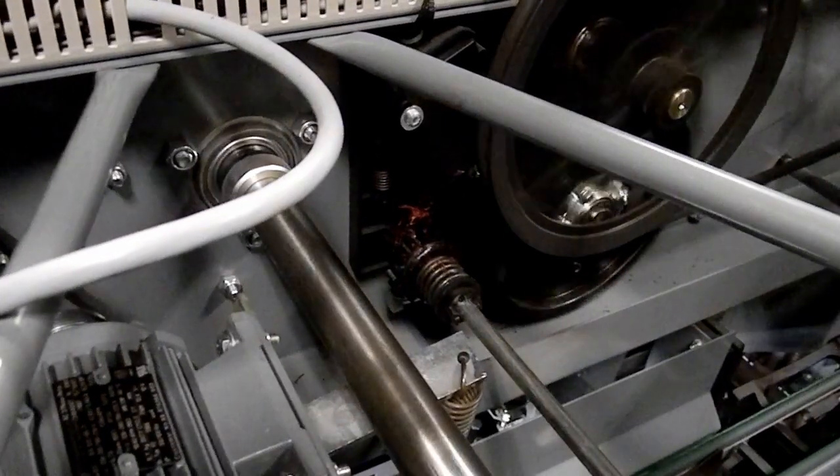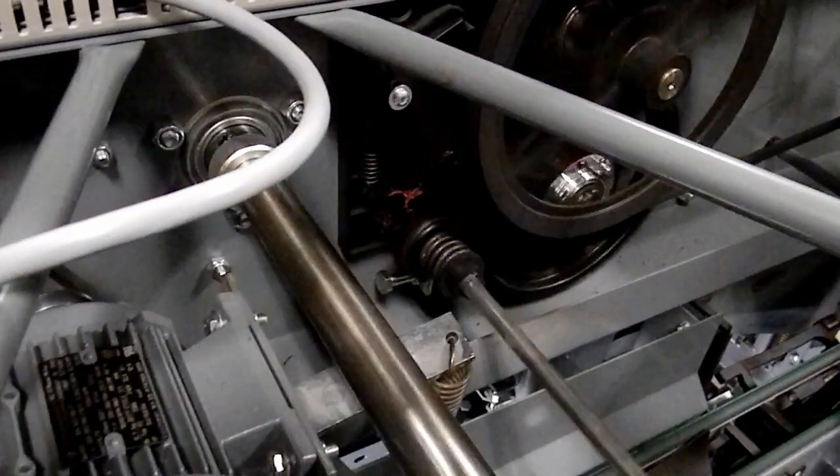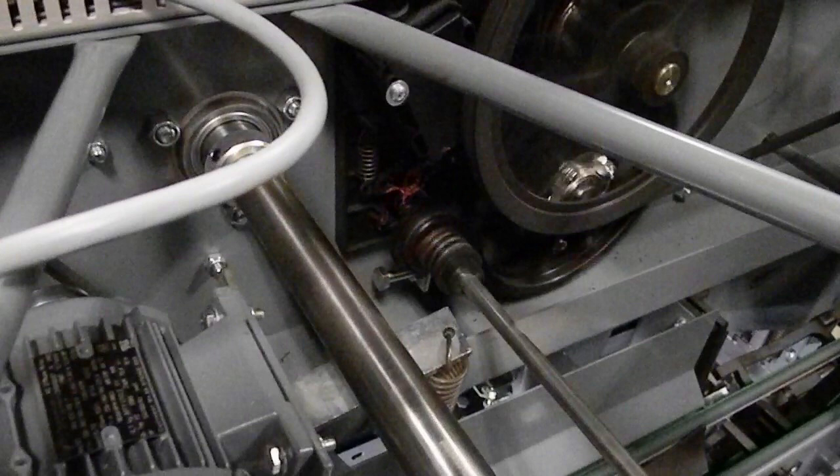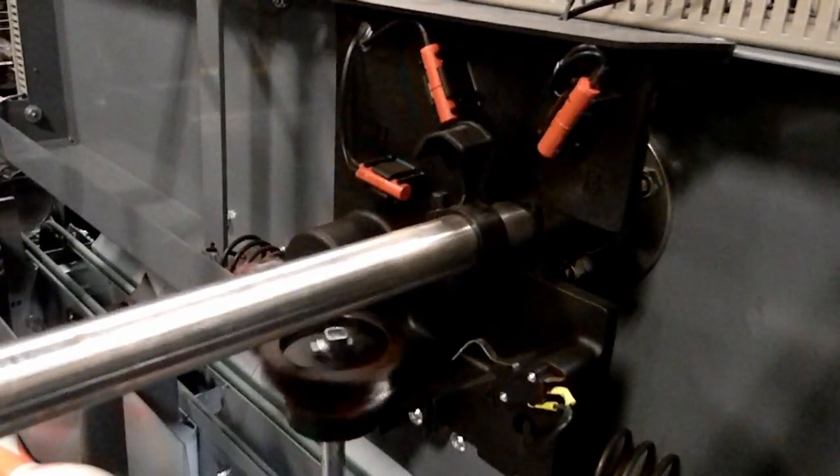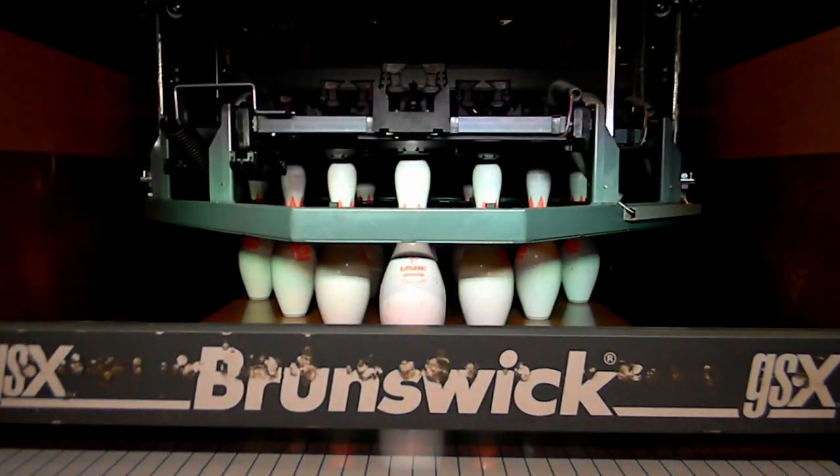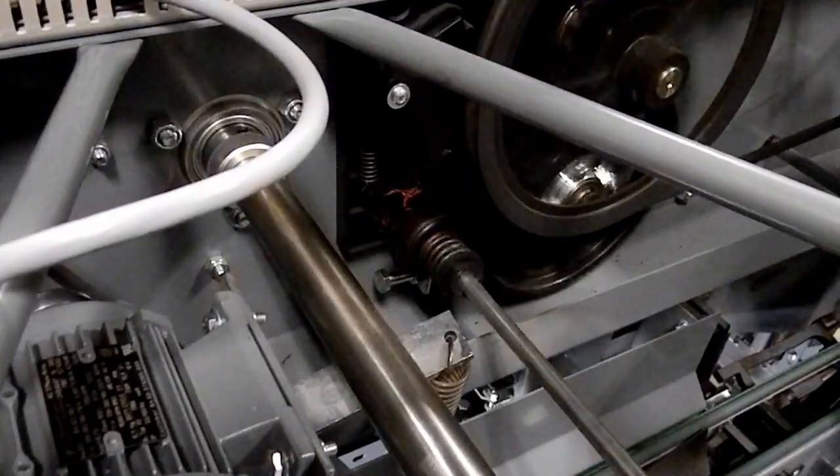The spotting tong solenoid energizes pulling the spotting tong clutch into the main table drive gear driving the tongs closed. Switch C is passed with no action. The cam passes switch D and the spotting tong solenoid is de-energized stopping the closing process.